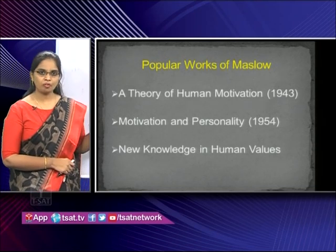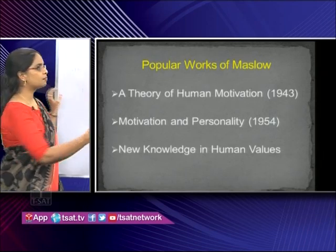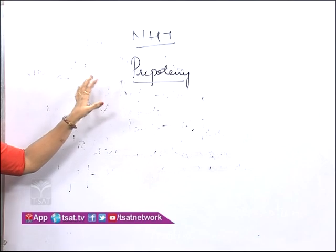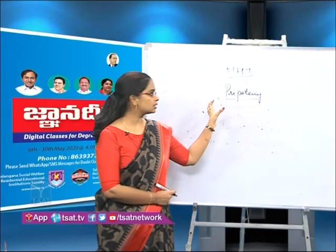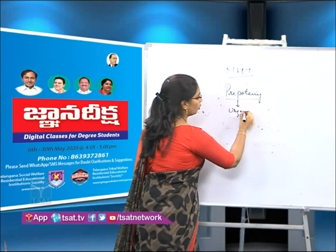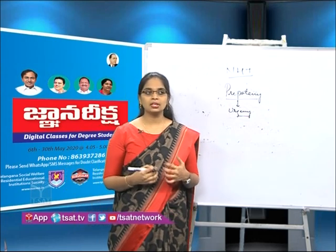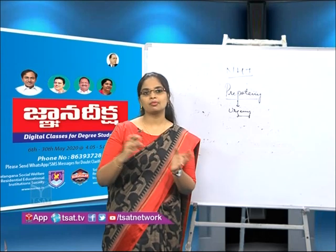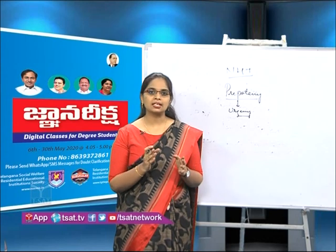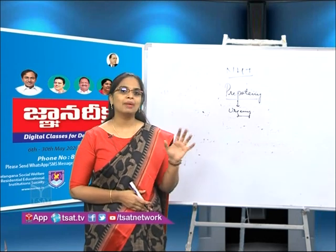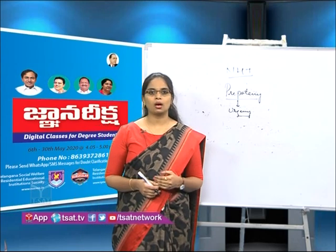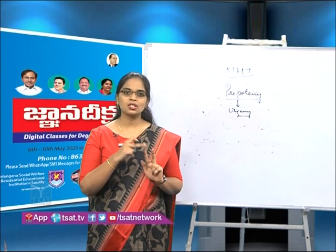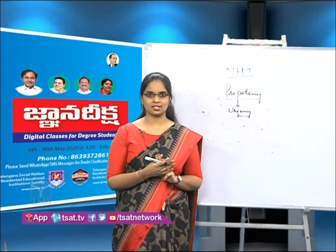The Need Hierarchy Theory is based on one principle — prepotency of needs, meaning urgency of needs. Every person has multiple needs at a time and categorizes them based on importance. For example, if I am thirsty, watching a movie, going shopping, and purchasing books are all needs — but I will prioritize satisfying my thirst first as the most basic need. After satisfying it, I categorize the remaining needs by importance and satisfy them in order. This is the concept of prepotency of needs.